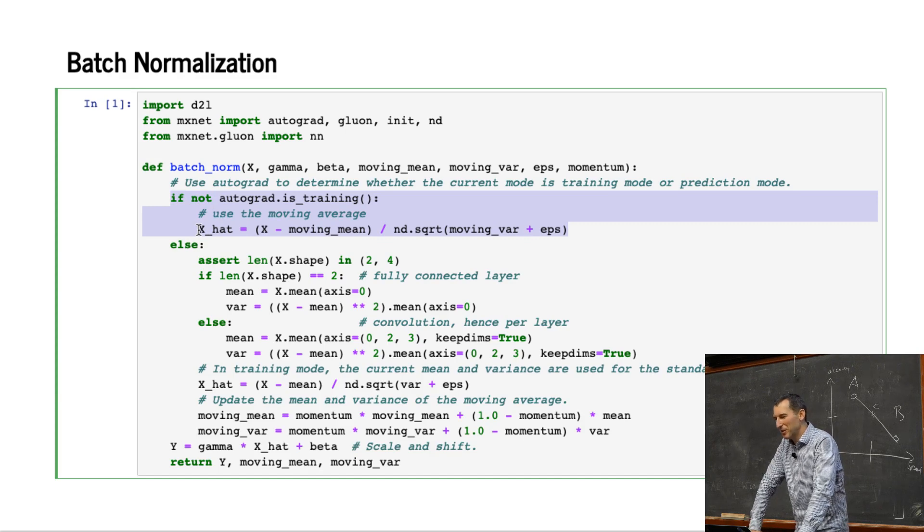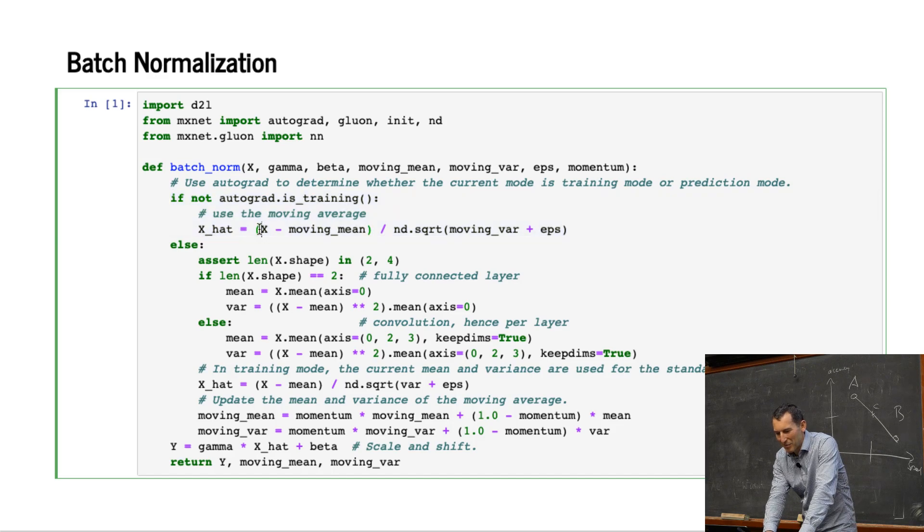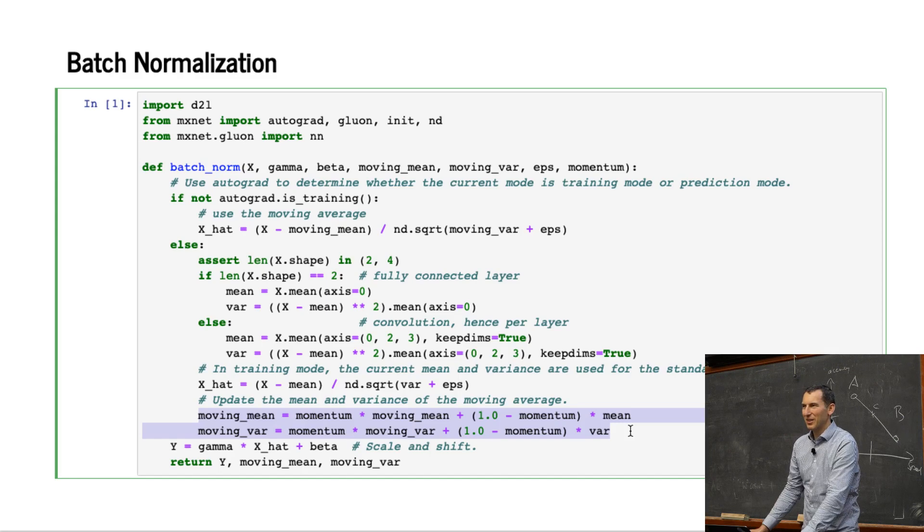Because I'm only going to use autograd during training. So if we're not training, then what I'm doing is just subtracting the moving mean and rescaling by the moving variance. And afterwards we actually perform the appropriate updates here. After processing a couple of observations on the test set, things are pretty much stable.